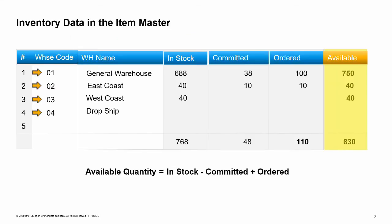The system tracks the quantities for each item and displays the quantities for each warehouse in the item master. The inventory data tab of the item master record shows up-to-date information on stock levels and demand for the item for each warehouse. This information is updated dynamically so it shows a true picture at any time.